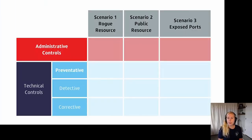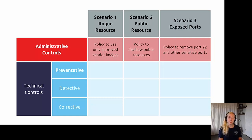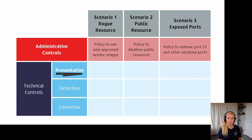Looking at example policies for our scenarios: in scenario one, Alice works with stakeholders to create and communicate a policy to use only approved vendor images. In scenario two, Bob's team is consulted and a policy is created to disallow use of public resources. In scenario three, Eve already has a policy to remove sensitive ports and works to communicate it. With all this in mind, administrative controls have limited effectiveness on their own — we also need technical controls to support our policies. Technical controls are divided into preventative, detective, and corrective categories.